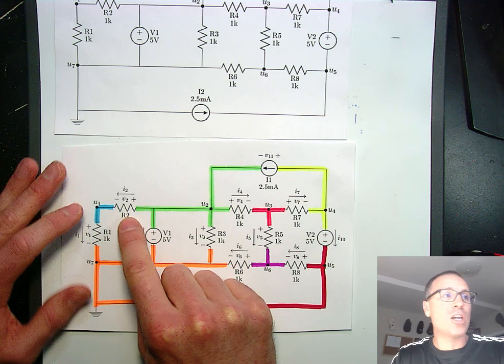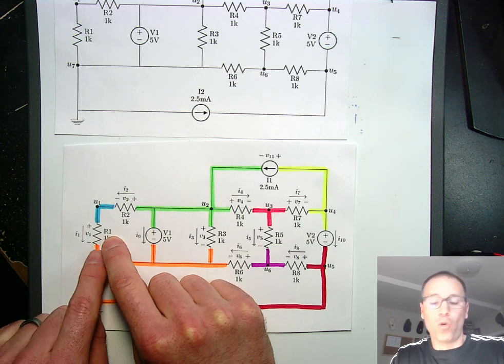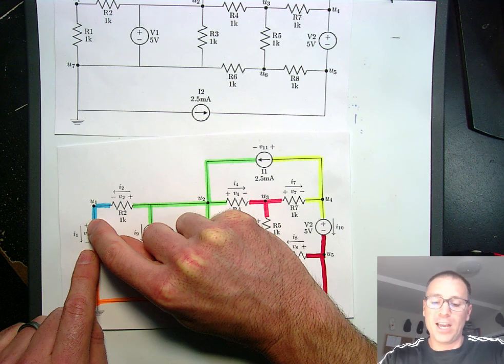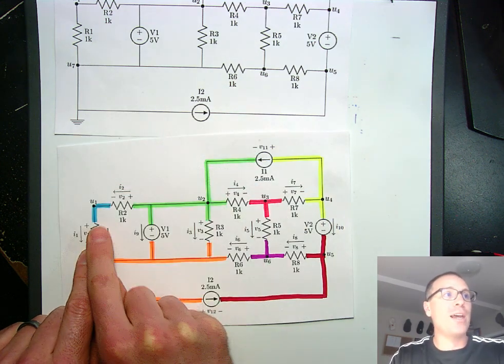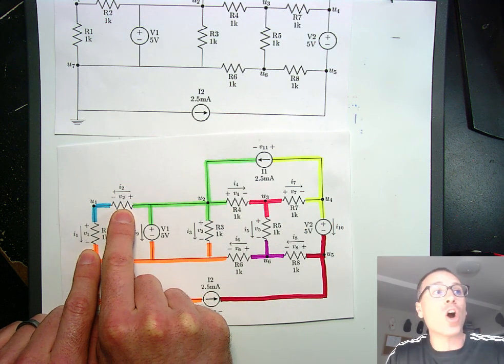Now each of these resistor 1, the voltage drop across resistor 1 goes from positive to negative. It has a current going this way. Same thing over here. These are done arbitrarily.